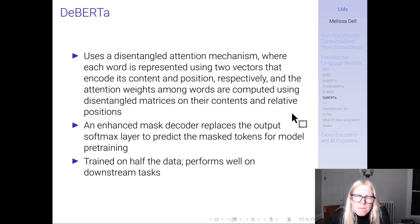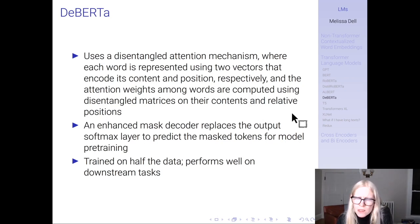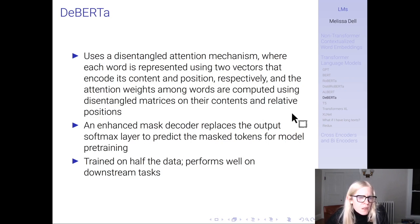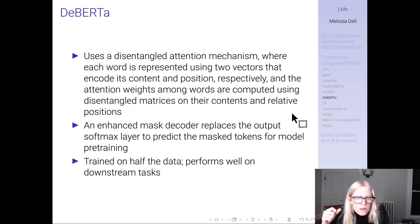Using RoBERTa or DistilRoBERTa would be a very reasonable choice. Another model people talk a lot about is DeBERTa, which uses a disentangled attention mechanism where each word is represented using two vectors encoding its content and position respectively. The attention weights among words are computed using disentangled matrices on their contents and relative positions. It also decodes a bit differently and argues that you can train on half the data and perform well on downstream tasks.